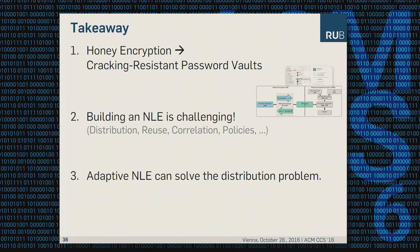The takeaway of this talk: with Honey Encryption you can build cracking-resistant password vaults, but building a Natural Language Encoder is very challenging. We have seen distribution-related problems, reuse problems, correlation problems, and password composition policy problems that all need to be considered beforehand. I've shown that our Adaptive Natural Language Encoder approach can solve the distribution-based problem. Thank you very much — if you have any questions, feel free to ask.